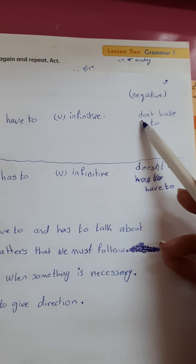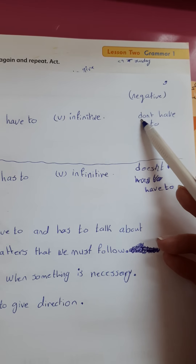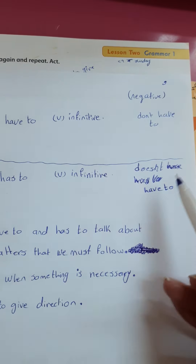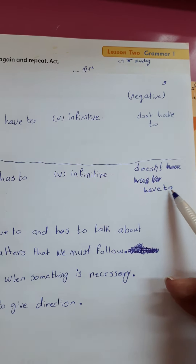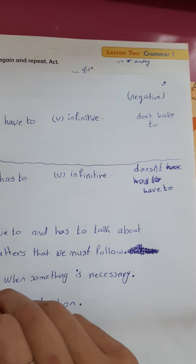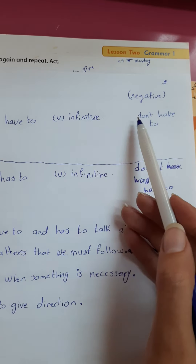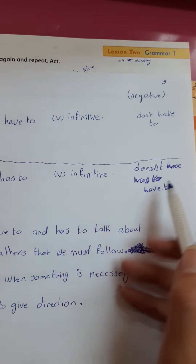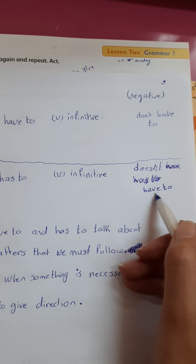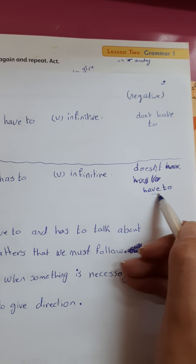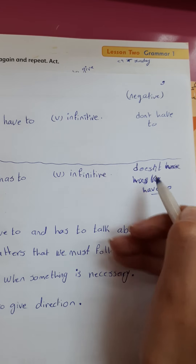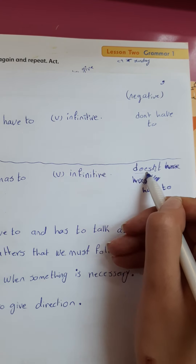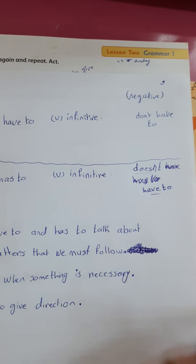So the negative form is 'don't have to' للجماعة, or 'doesn't have to' للمفرد. 'Don't' للجماعة, 'doesn't' للمفرد — and we keep 'have to' because we already used 'doesn't', so it becomes 'doesn't have to'.